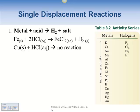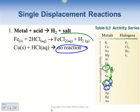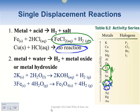In single displacement reactions, a metal and an acid create hydrogen gas and a salt. You need to compare the metal to hydrogen on the activity series. Since copper is below hydrogen, there's no reaction. Since iron is above hydrogen, a reaction occurs. Examples: potassium plus water makes potassium hydroxide, and iron plus water makes iron oxide.